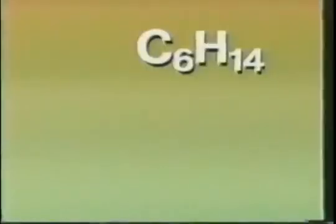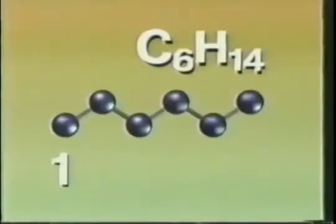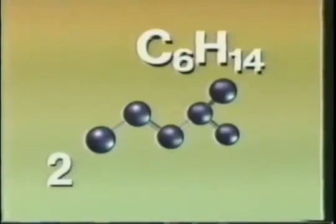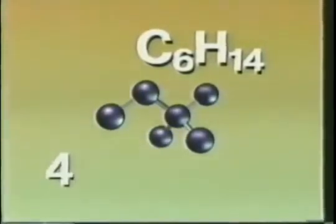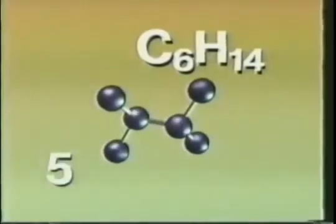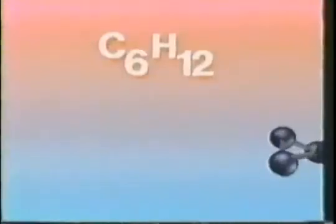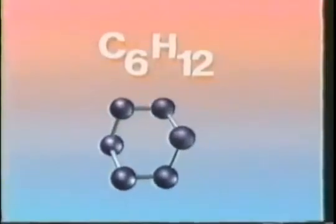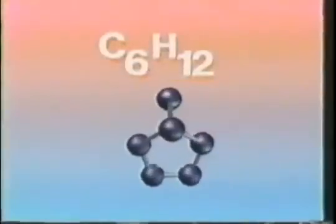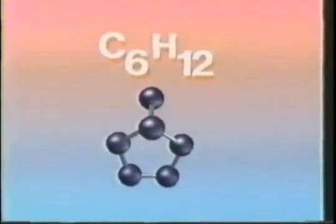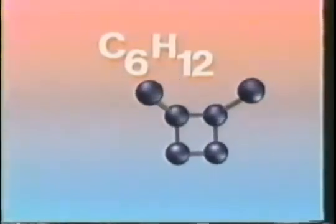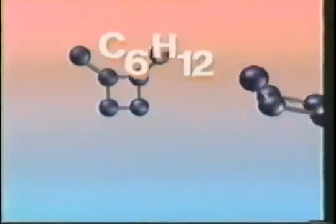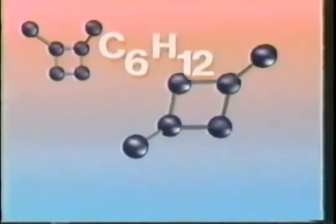If the number of carbon atoms is increased to six, a total of five different chain structures are possible. Furthermore, carbon also forms ring structures: a six-membered ring, a five-membered ring with one carbon attached, or a four-membered ring with two carbons attached, oriented in at least four different ways.